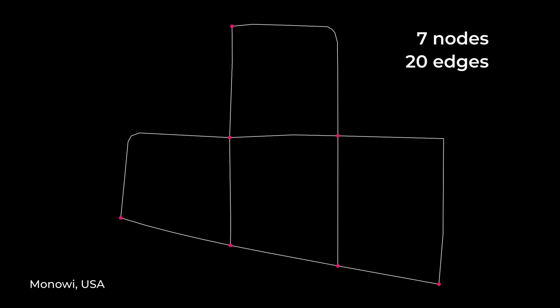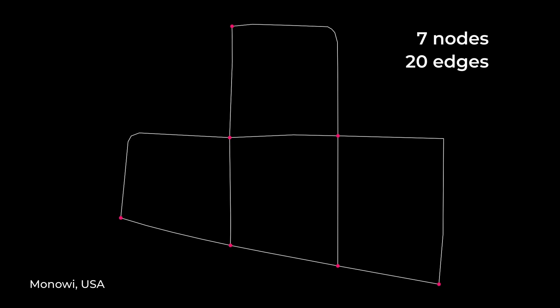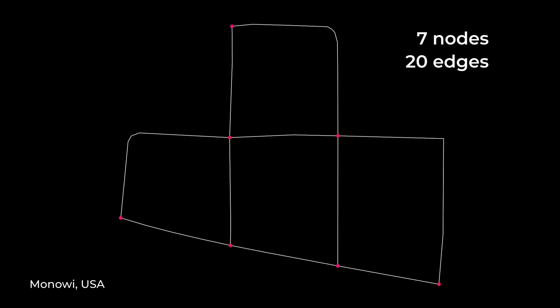Yes, if we consider that the connection between two nodes only has one direction. But in graph theory, we often count both directions — unless, of course, it's a one-way street. This is the convention I will use going forwards. And apparently there are no one-way streets in Monowee, hence it has 20 edges.